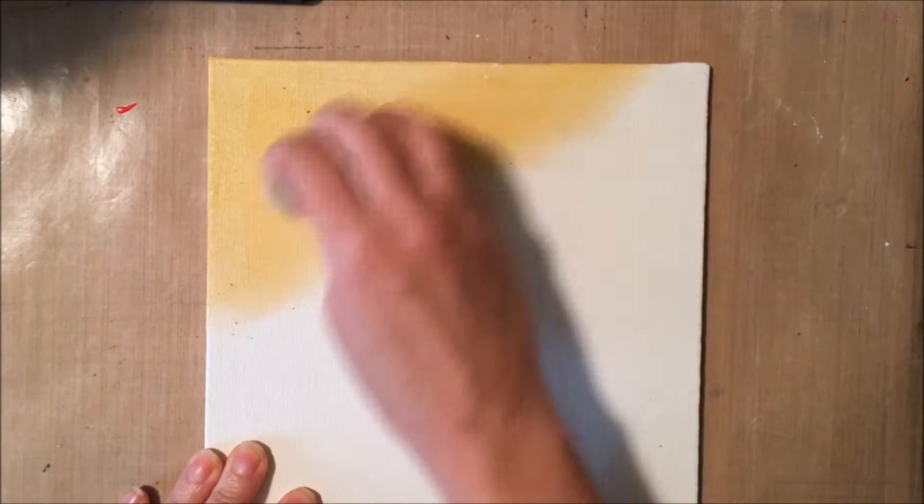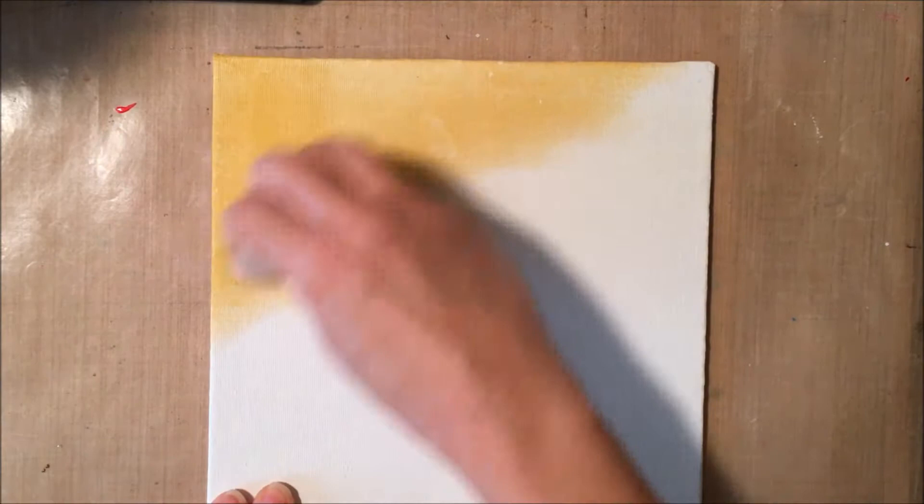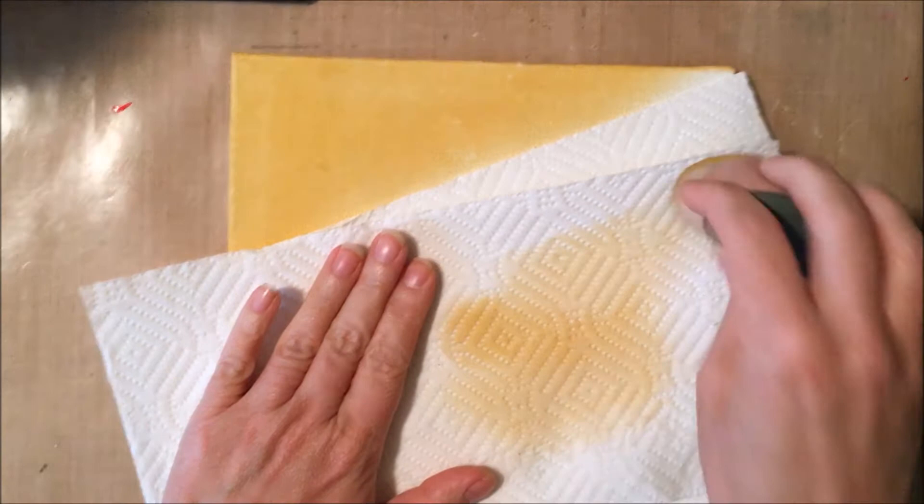Now of course this is a canvas so it has a textured surface. So it's not going to be completely opaque when I put this on. You will see some of the canvas texture if you're really looking close, some of that peeking through. But that's fine.